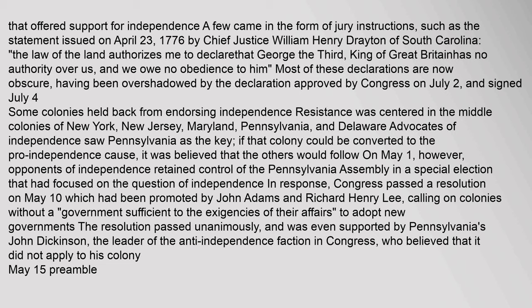Most of these declarations are now obscure, having been overshadowed by the declaration approved by Congress on July 2 and signed July 4. Some colonies held back from endorsing independence; resistance was centered in the middle colonies of New York, New Jersey, Maryland, Pennsylvania, and Delaware. Advocates of independence saw Pennsylvania as the key — if that colony could be converted to the pro-independence cause, it was believed that the others would follow. On May 1, however, opponents of independence retained control of the Pennsylvania Assembly in a special election that had focused on the question of independence. In response, Congress passed a resolution on May 10, promoted by John Adams and Richard Henry Lee, calling on colonies without a government sufficient to the exigencies of their affairs to adopt new governments. The resolution passed unanimously, and was even supported by Pennsylvania's John Dickinson, the leader of the anti-independence faction in Congress, who believed that it did not apply to his colony.